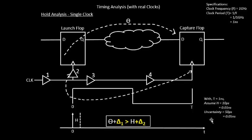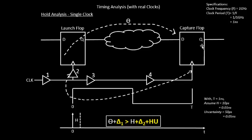With these numbers in place, we have to add the uncertainty value as well. So apart from the hold time requirement of this particular capture flop, we need some additional value for the uncertainty. The capture flop essentially says: please hold your data for my internal hold time plus some uncertainty value.